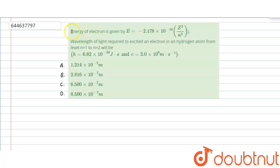Hello, here the given question is: Energy of electron is given by E equals minus 2.178 times 10 to the minus 18 z squared by n squared joules.